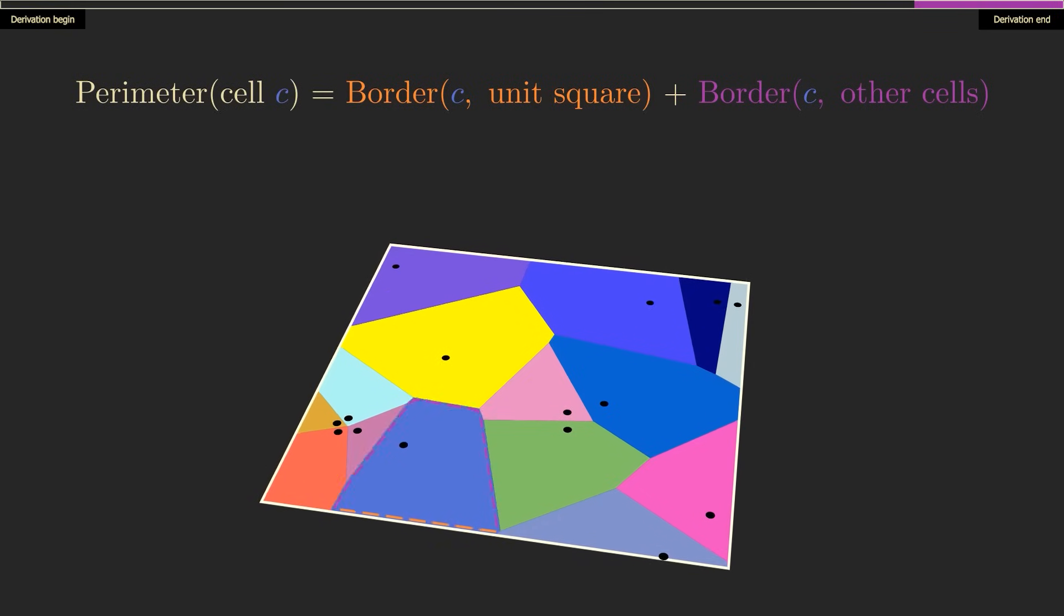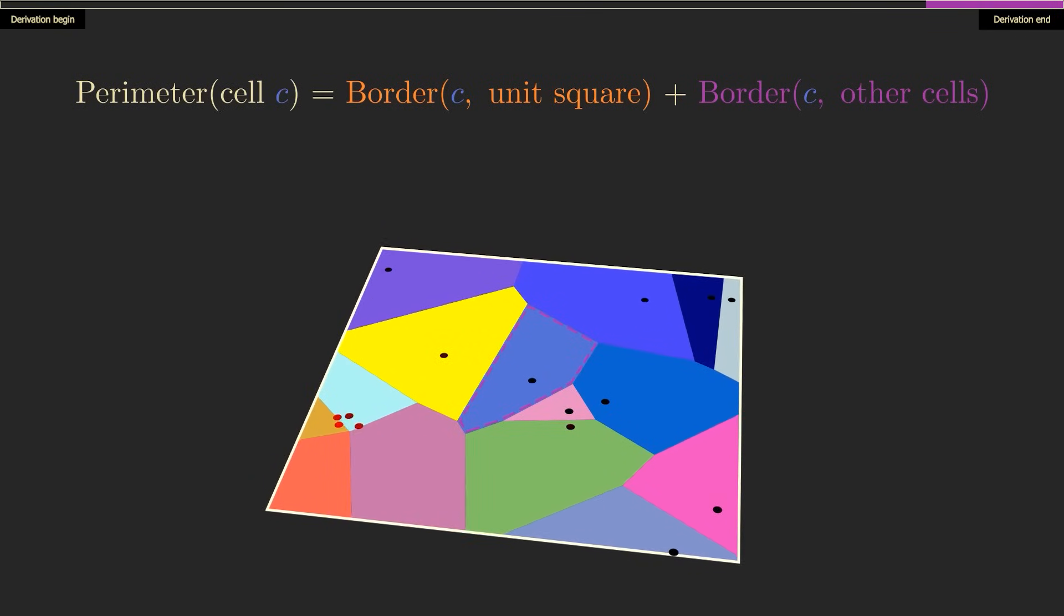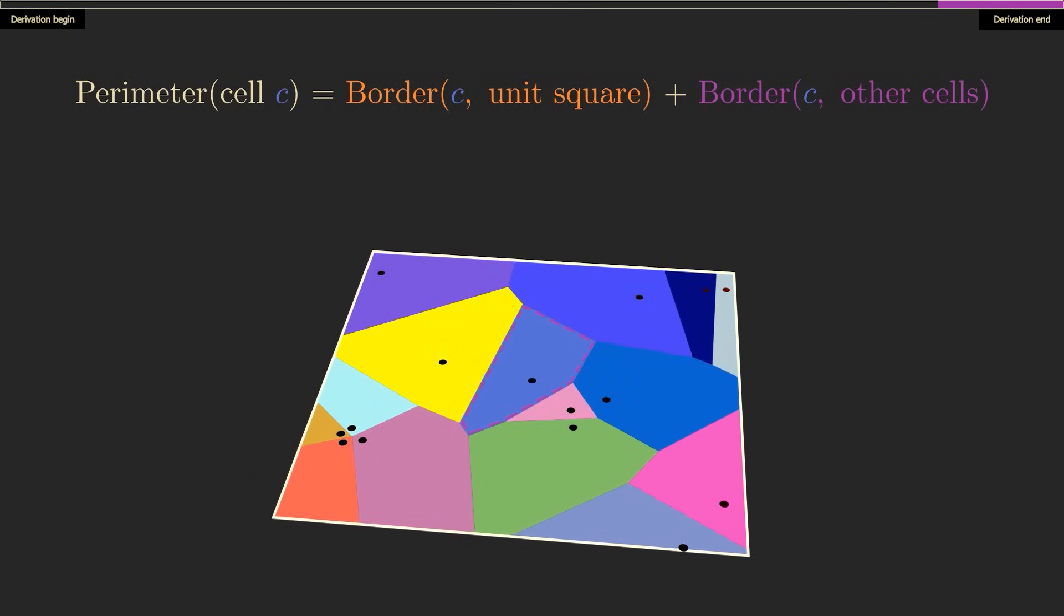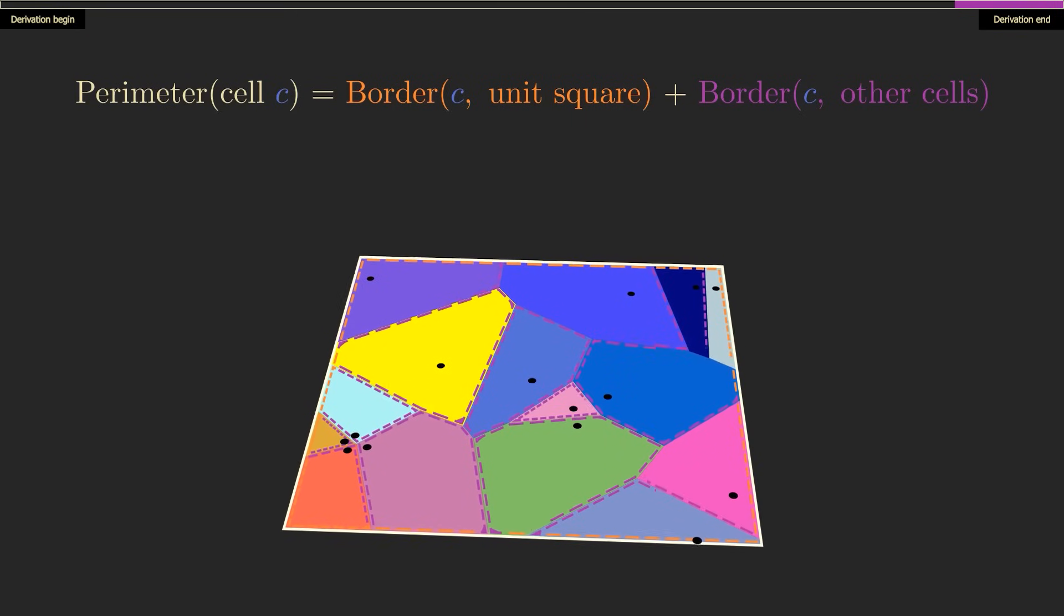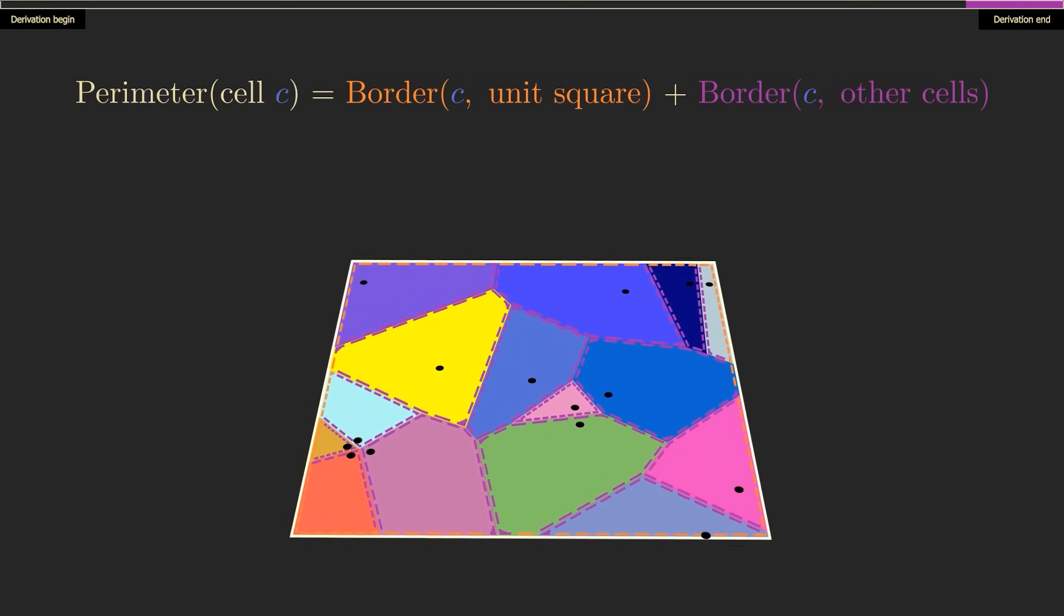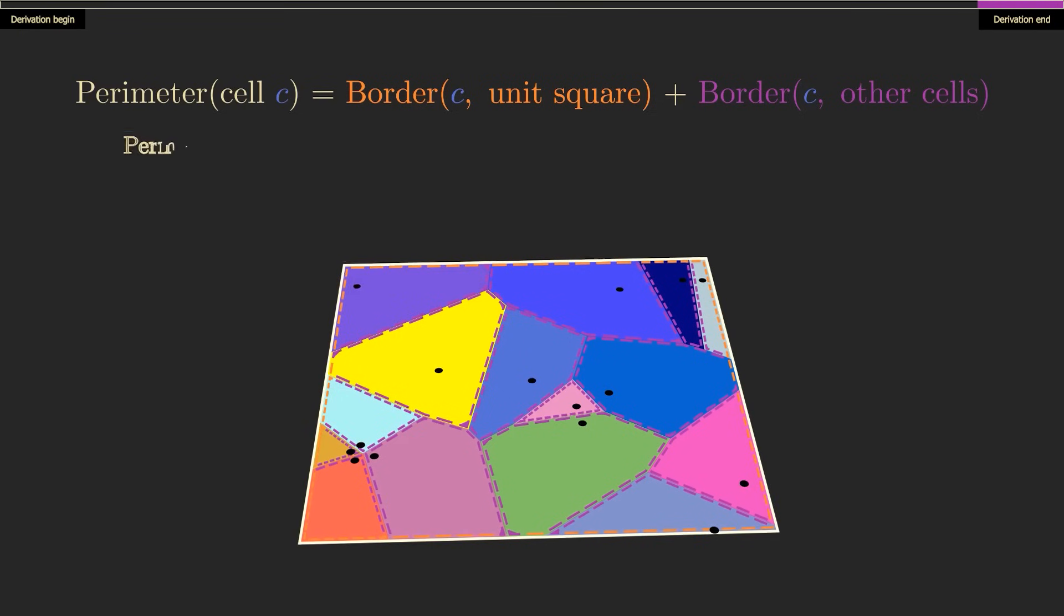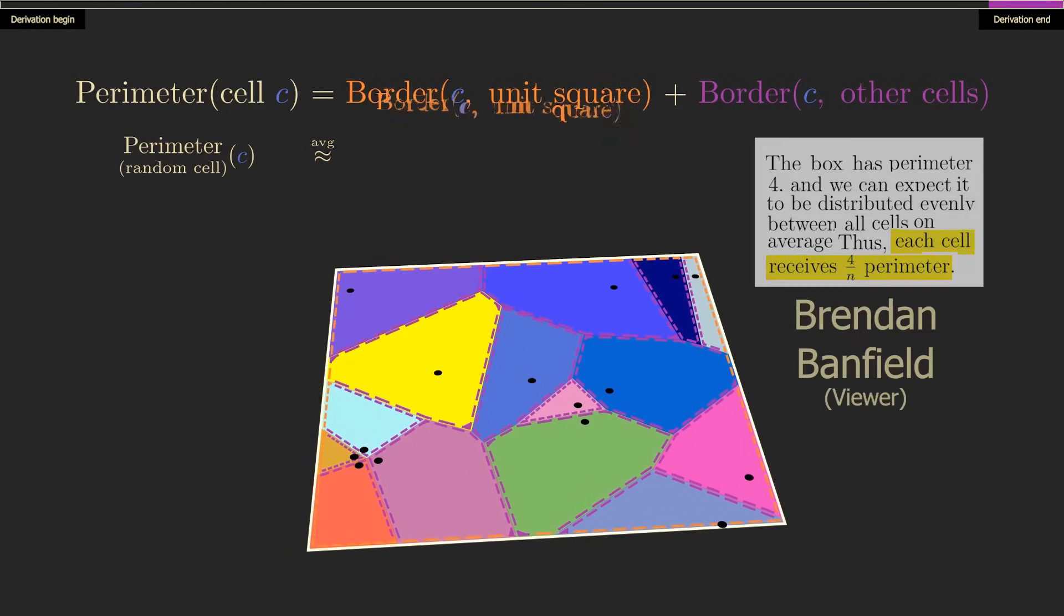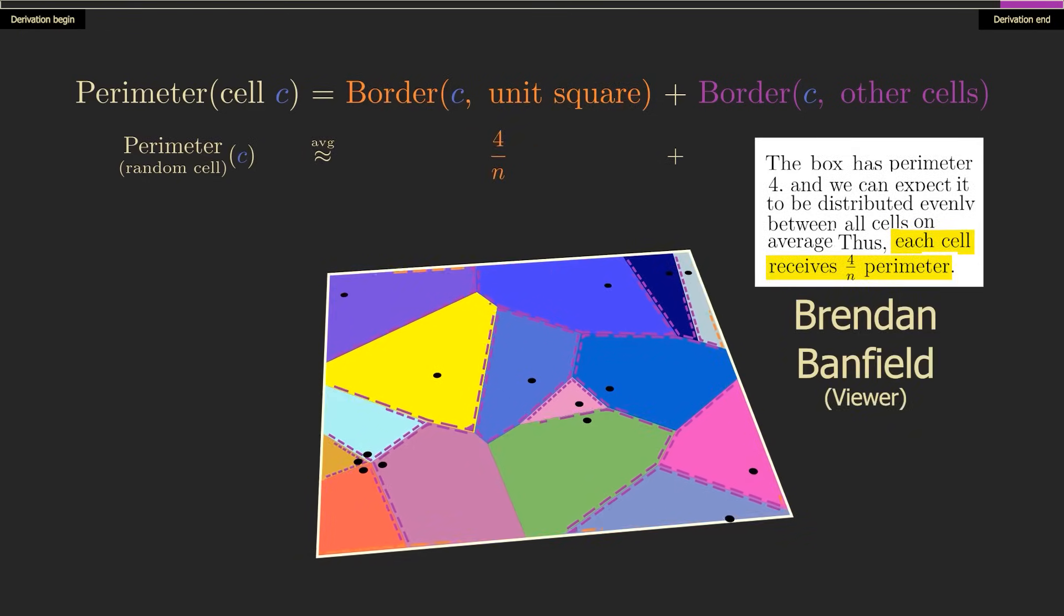The former could be 0, if it's surrounded by many other sites. But once again, all cells can be viewed as equals. Any cell takes up, on average, 1 over n of the perimeter of the unit square, which is 4, giving us 4 over n.